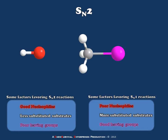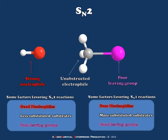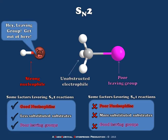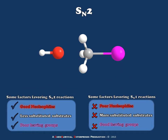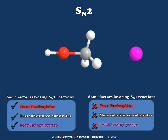So if we have a reaction between hydroxide ion, indicated on the left here, and methyl chloride, represented on the right here, we'd be dealing with a strong nucleophile, an unobstructed electrophilic carbon, and a poor leaving group. We have all the recipe conditions needed for an SN2 to occur and none of what we need for SN1. Our nucleophile is going to want to attack, and because the electrophile is unobstructed, nucleophilic attack can go through easily.